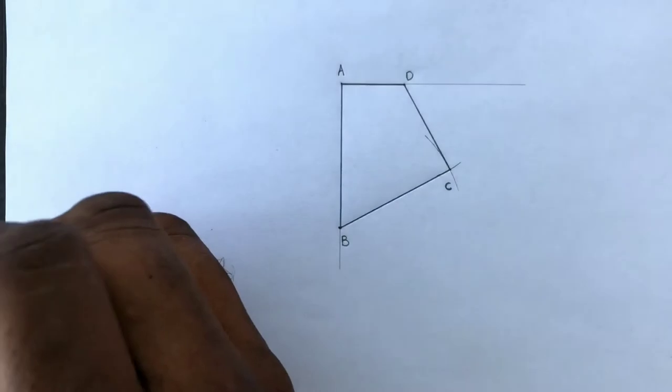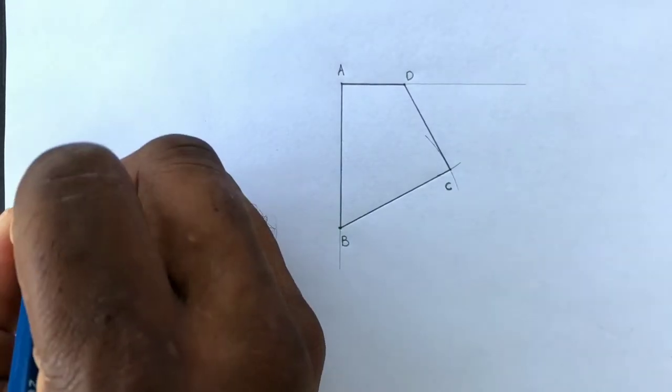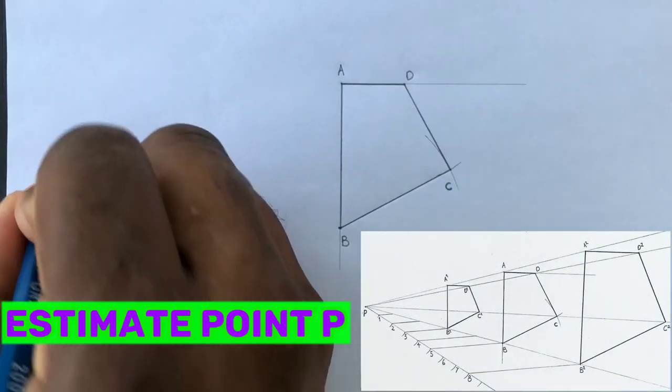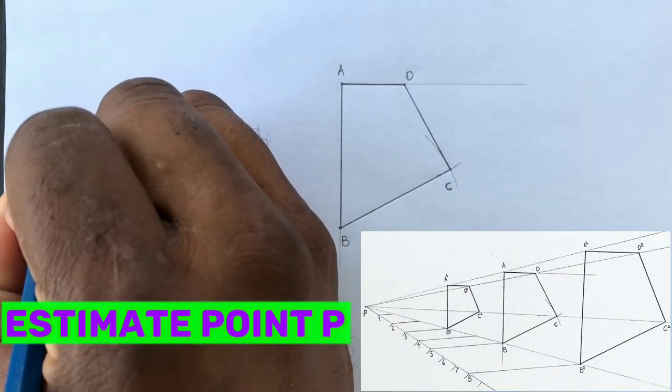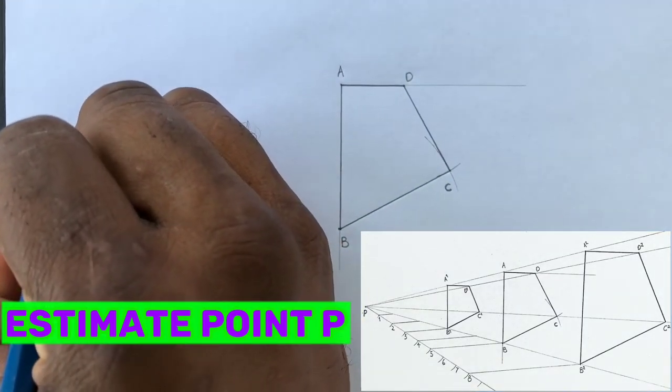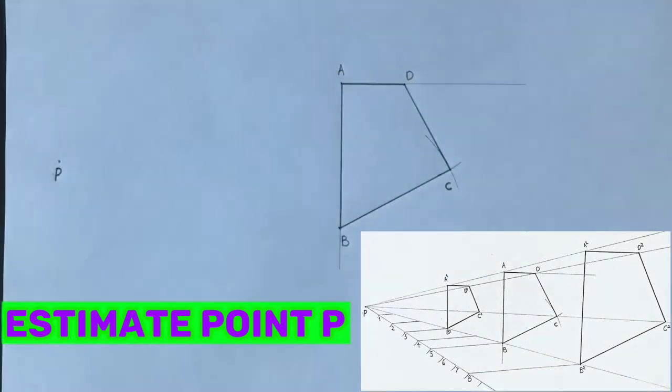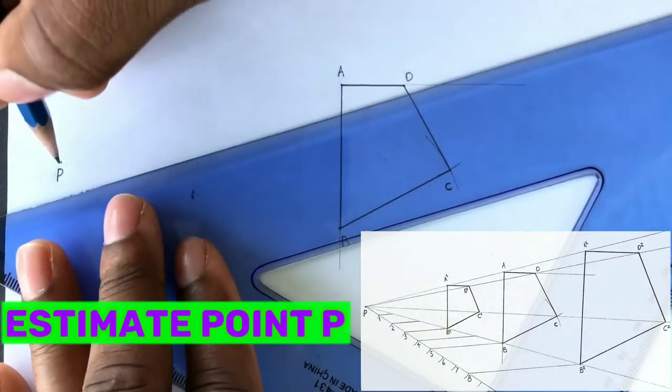On the outside of your quadrilateral, conveniently identify and label a point as point P. Now from point P, you will draw lines to pass through all corners A, B, C and D of your quadrilateral.